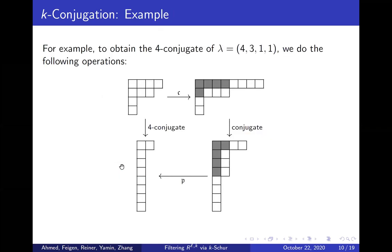To illustrate k-conjugation: starting with λ = (4,3,1,1), we apply map c to get a 5-core by shifting the first two rows to the right and introducing new cells. Then we perform ordinary conjugation, transposing the partition over the diagonal to get a new partition. Finally, applying map p removes the dark squares by shifting to the right. We started with a 4-bounded partition and ended with another 4-bounded partition — the 4-conjugate of λ.